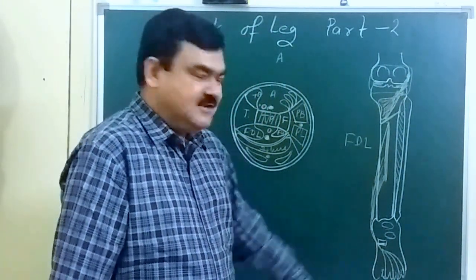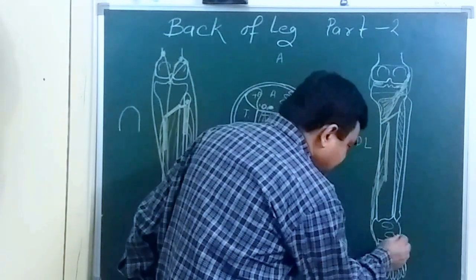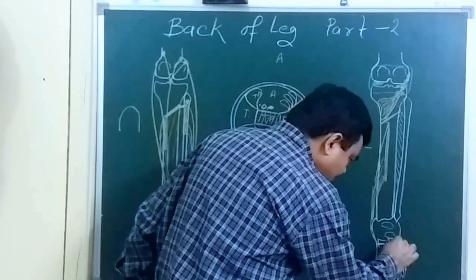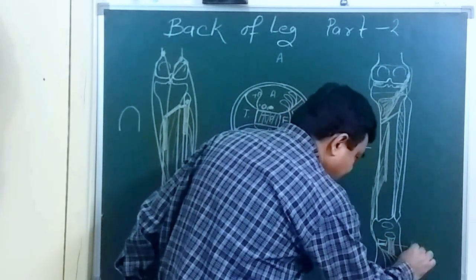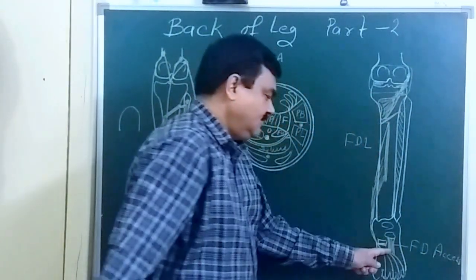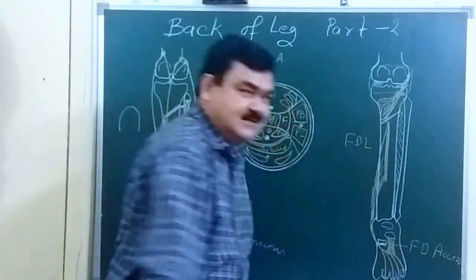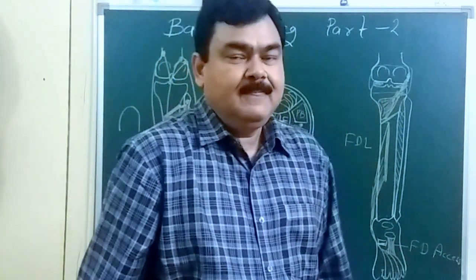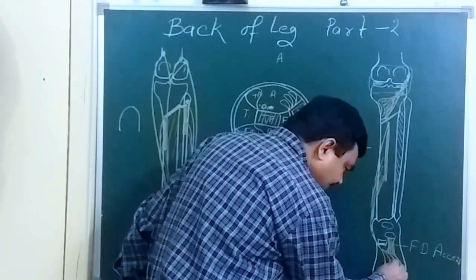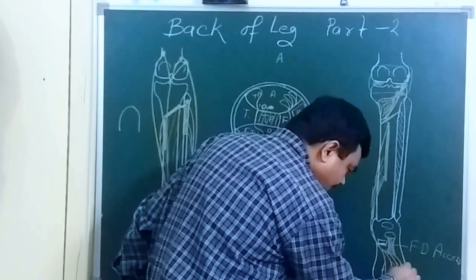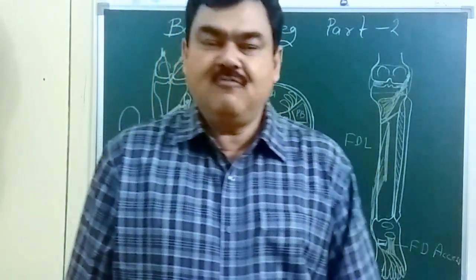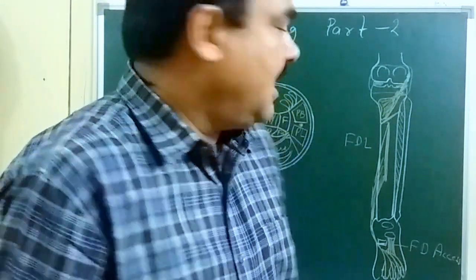This muscle has an additional feature. It is attached to the calcaneum via the flexor digitorum accessorius. It also gives origin to the first, second, third, and fourth lumbricals. So the flexor digitorum longus gives origin to four lumbricals.